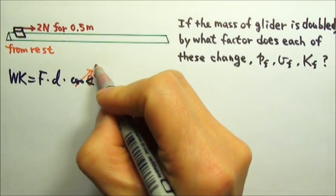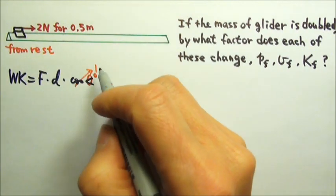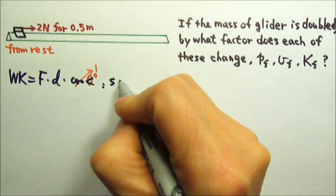And cosine 0 degrees is 1. So the same force, same displacement, means the work would be the same.